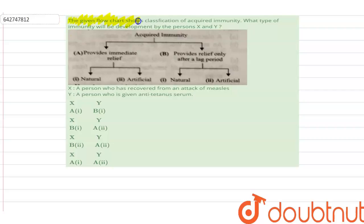The question here says: given flowchart shows a classification of acquired immunity, what type of immunity will be developed by person X and Y? Person X is a person who has recovered from an attack of measles, and Y is a person who is given anti-tetanus serum.